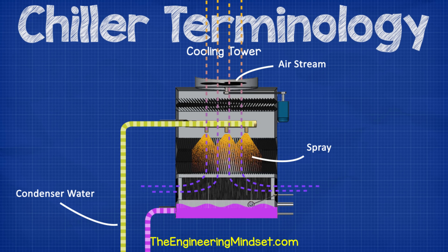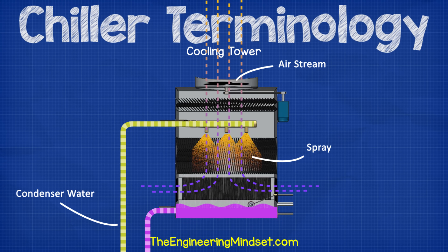Cooling tower, often referred to simply as just the tower. These sit on the outside of the building, usually on the roof, and are only used with water-cooled chillers. They will be either wet or dry type, but both types use fans to move air through the tower. With wet type, the condenser water circuit is open and the water is sprayed into the airstream, which removes the heat and cools the water down. In a dry type, the condenser circuit is closed and the water passes through a heat exchanger where the airstream blows across to remove the heat. Additionally, some cooling towers will spray water over the cooling coils to help remove the heat.